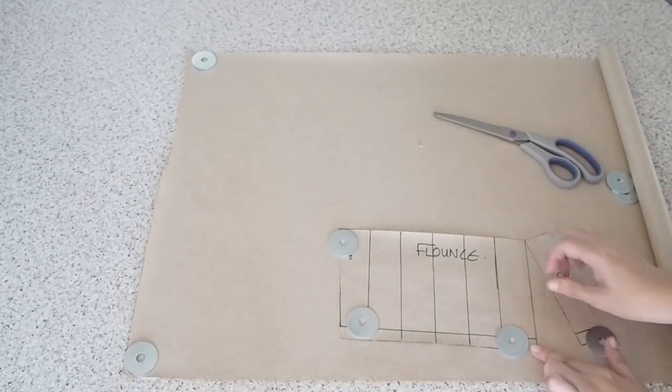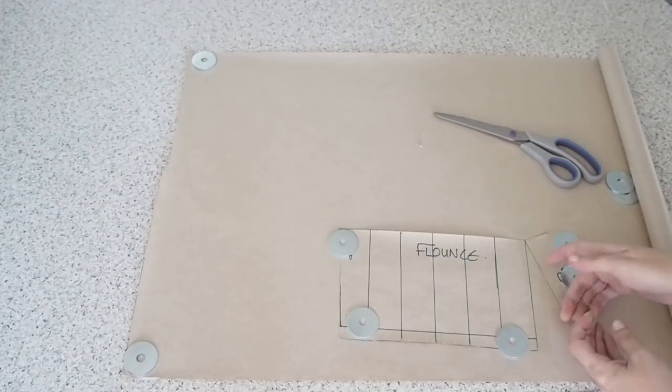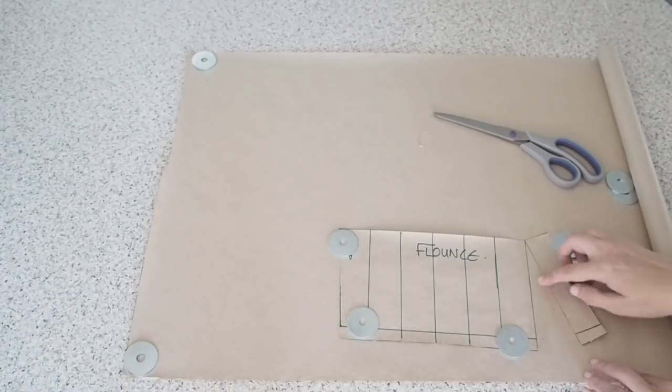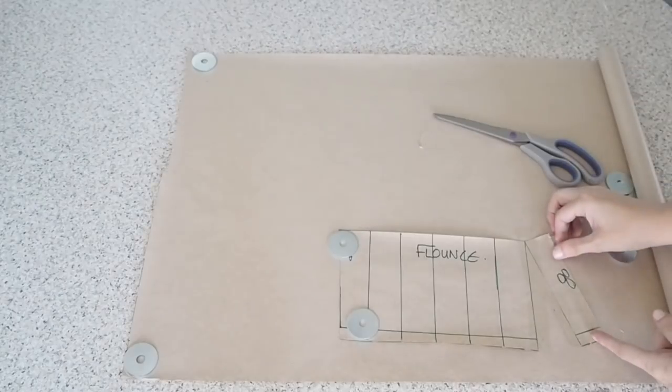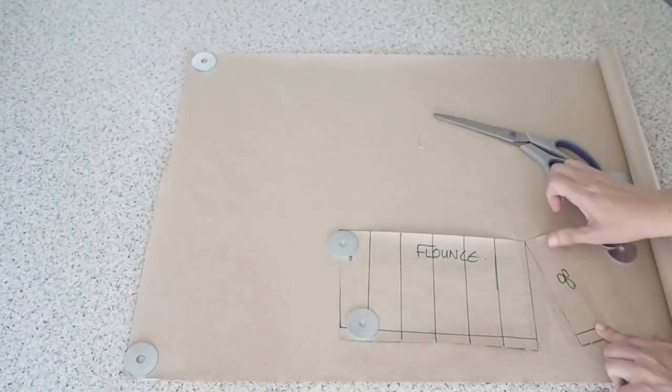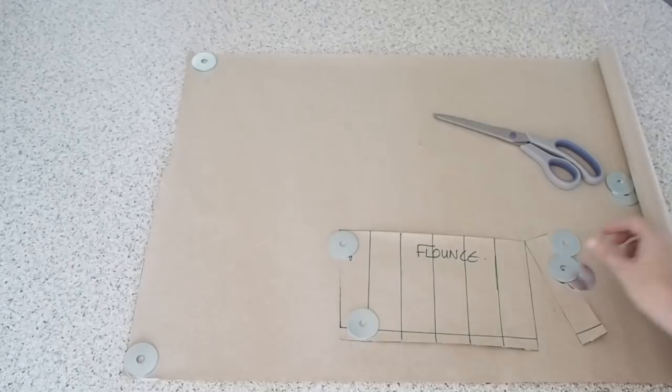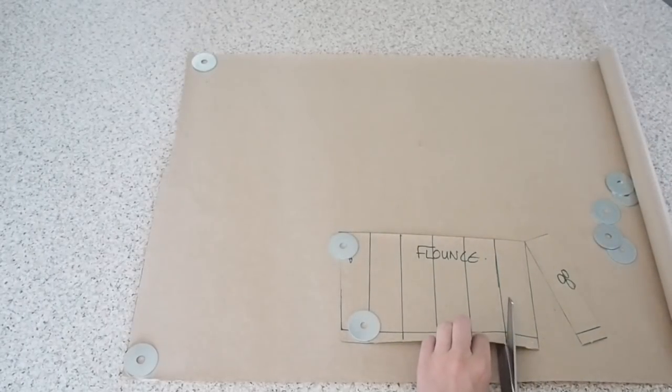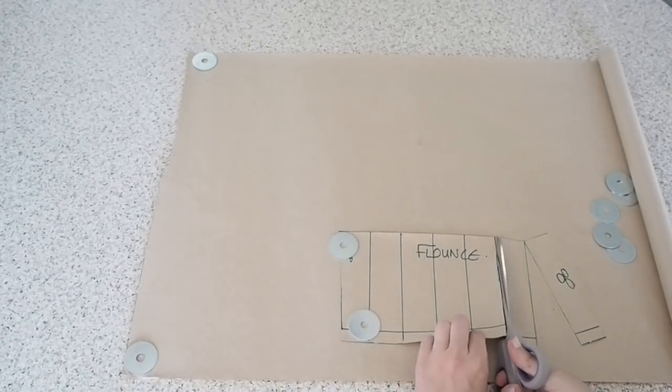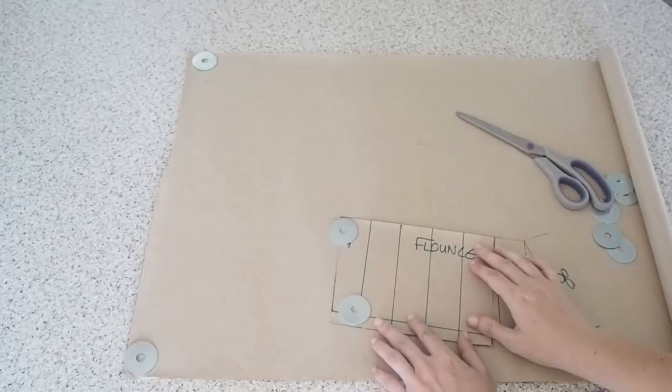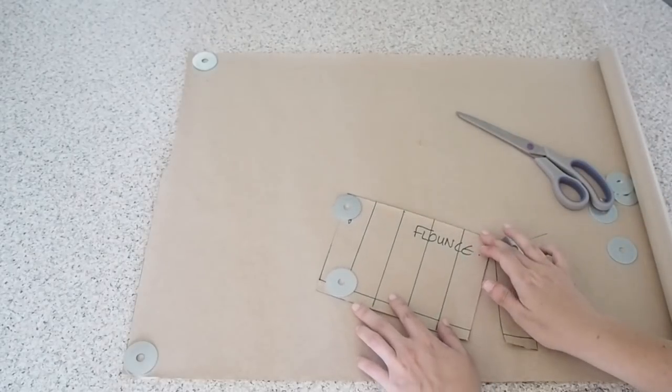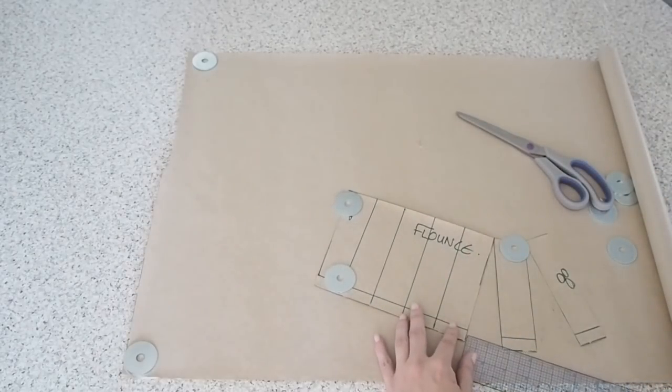You could do yours four inches apart if you wanted, just it's down to personal preference really. So I've slashed open my line, I've spread my two inches and then I've stuck down my pattern piece. And when I'm slashing open my lines I'm not slashing the whole way to the top, I'm slashing just to a couple of millimeters from the top.